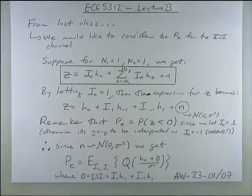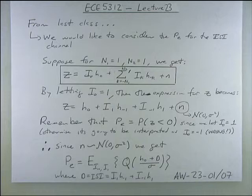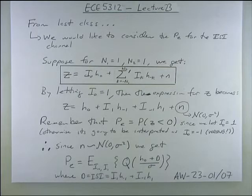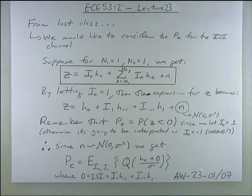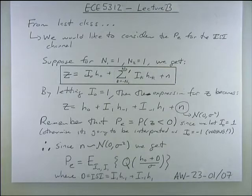This is lecture 23 of 5312. We're going to build upon the ISI discussion from lecture 22. In the last lecture we called this variable y_not — the sampling instant of the desired sample that contains the desired component and all ISI components, both precursor and post-cursor, plus noise.